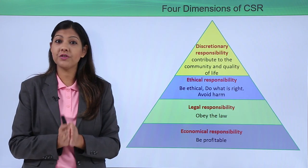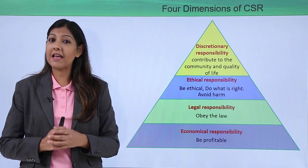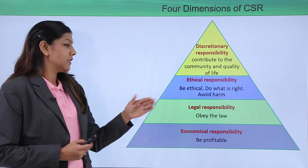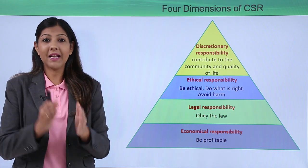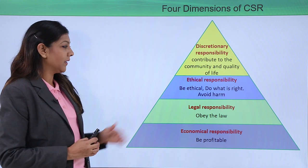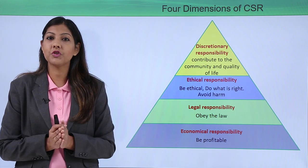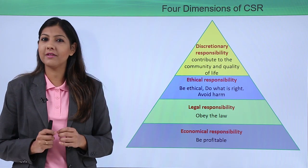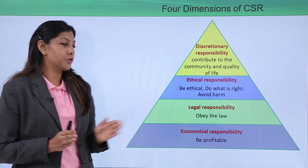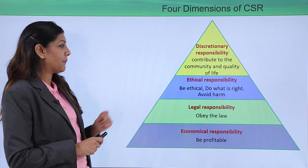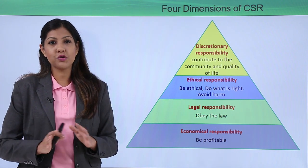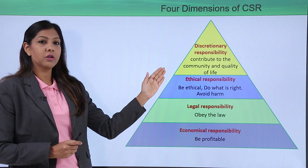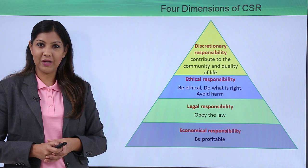Now let's look at the four dimensions of CSR. Visualized as a pyramid, every corporate takes four dimensions into consideration. First, economic responsibilities — everyone wants to be profitable while also doing their bit for society. Second, legal responsibilities — obeying the laws of the country, similar to how foreign counterparts follow laws strictly. Third, ethical responsibilities — do things the right way, not the wrong way, with a moral sense of belief. Fourth, discretionary responsibilities — contributing to the entire community and quality of life. These are the four dimensions of CSR.